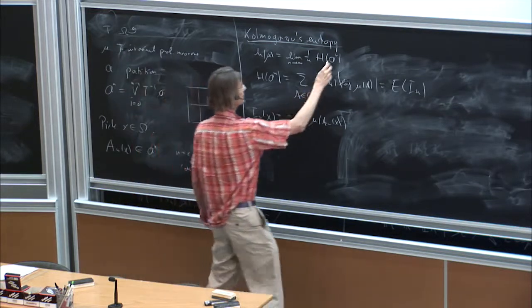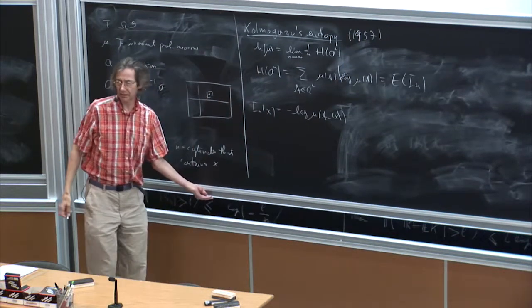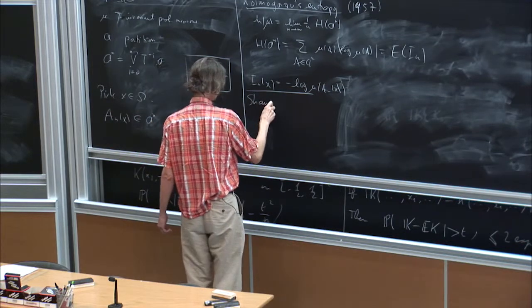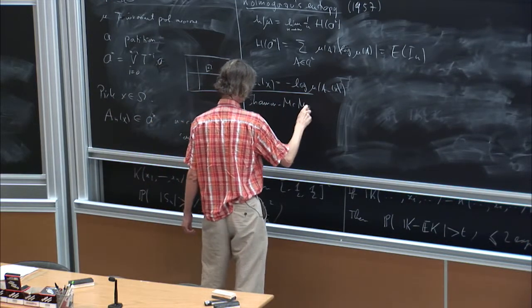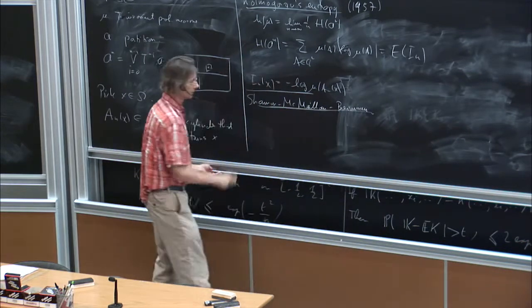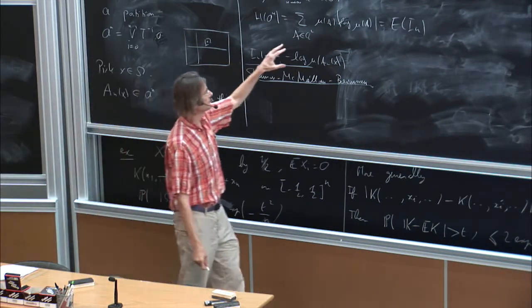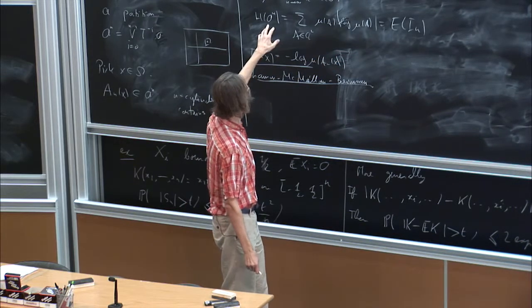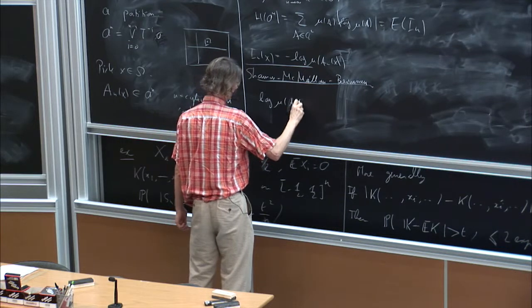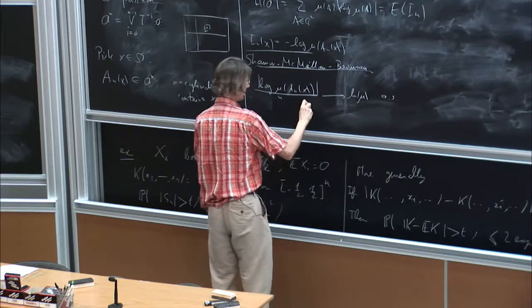So that was the definition which I believe dates from 1957. Preceding actually was the notion, the more localized notion by Shannon which we nowadays know as the theorem of Shannon-McMillan-Breiman. Namely you look at the fixed point and you look at the decay rate. This one kind of tells you the average decay rate should be like the entropy and this is exactly what it says - namely you look at the log of mu of A_n of x over n and then this goes to the entropy almost surely as n goes to infinity.